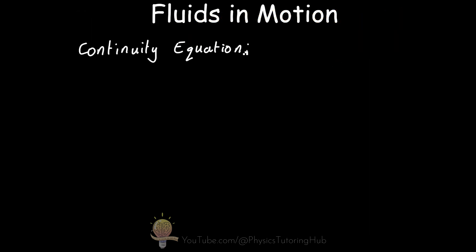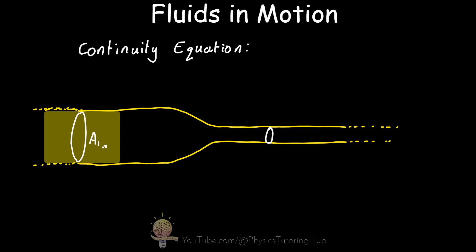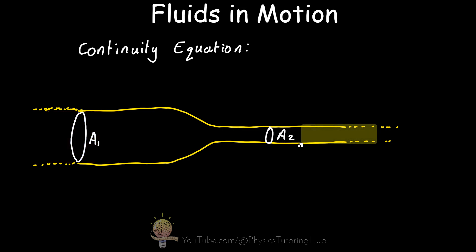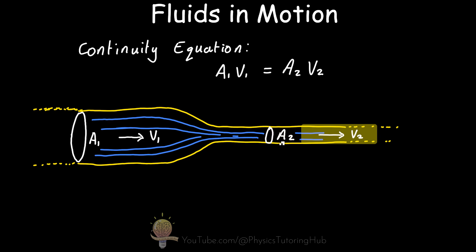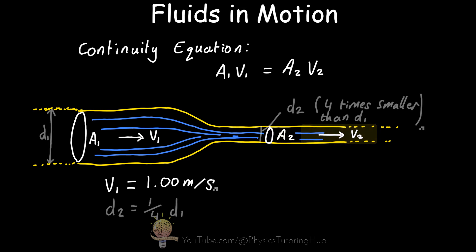So let's imagine we have a length of pipe where water enters on the left-hand side at one meter per second but exits on the right-hand side at a different speed. The pipe at the center narrows down to one quarter of its original diameter. What is the velocity of the water exiting the pipe? We're going to treat the water as an ideal fluid.